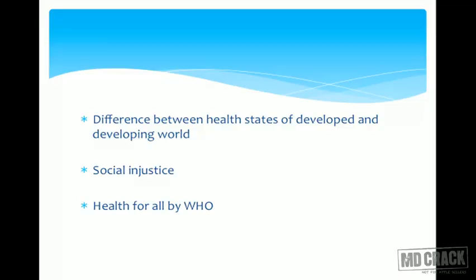This gives rise to something called social injustice. Social injustice means: is it right that people of developed countries enjoy better health whereas people from developing countries continue to have a depleted health system? Health is one of the basic tenets of human rights — it is non-negotiable. I want everybody across the platform to have a satisfactory level of functioning as well as a satisfactory level of health. This is the concept of social injustice.